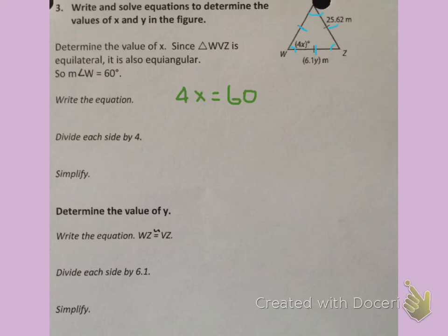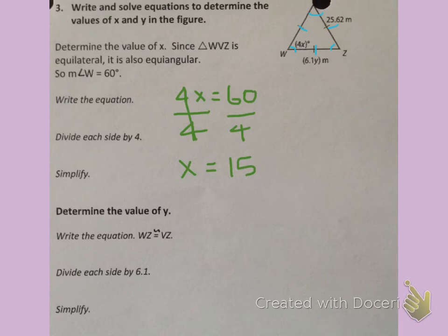So I have 4X equals 60. To solve, we're going to divide each side by 4, keeping it balanced. 4X divided by 4 is just X, and 60 divided by 4 is 15. Because we're measuring angles, we put the degree symbol. X is 15 degrees.